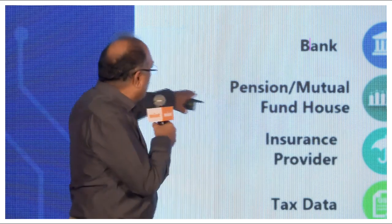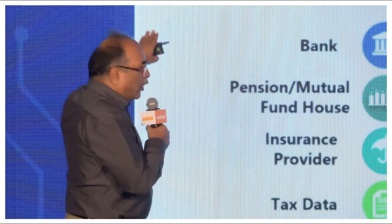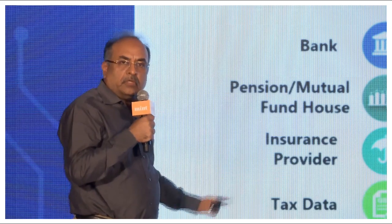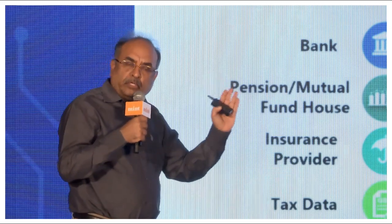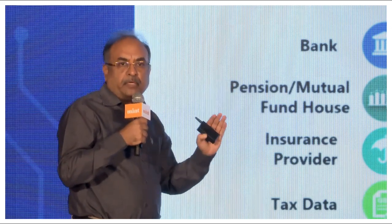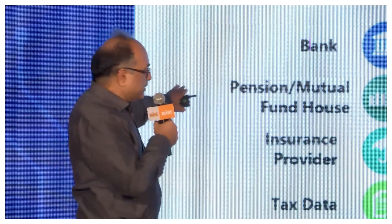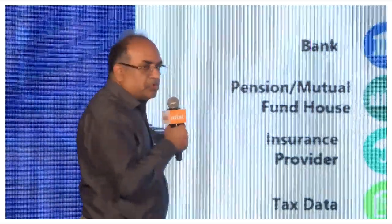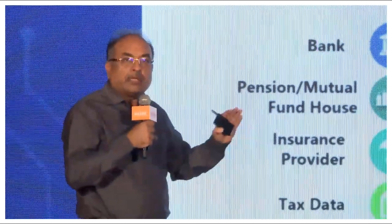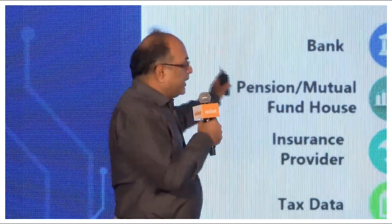In UPI, it happens only from one bank to another bank, but in account aggregator you have all kinds of financial data — it's only from regulated entities: the banks, your insurance, your capital market, GST and all of that. And it will be shared with one entity where you are giving the consent.